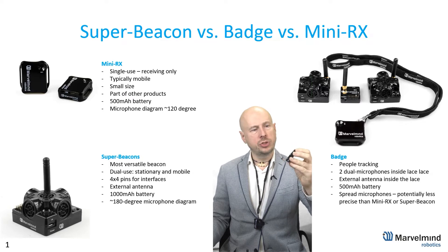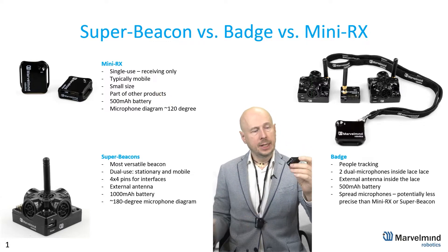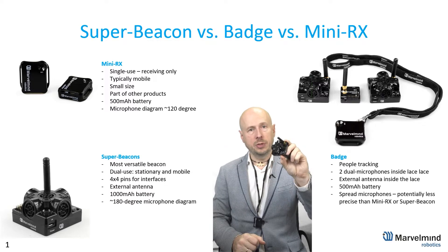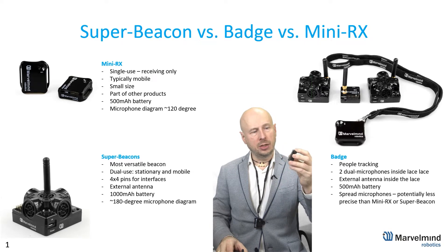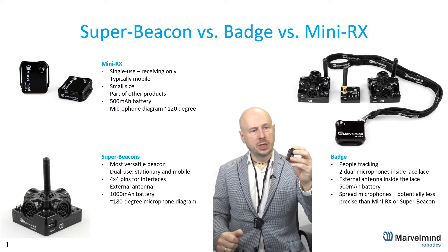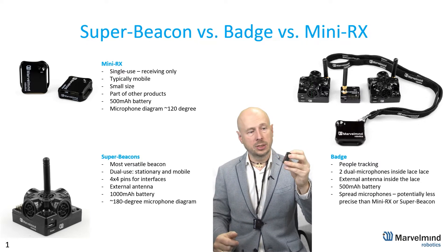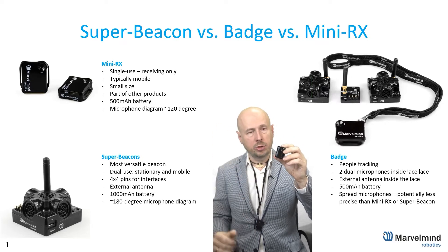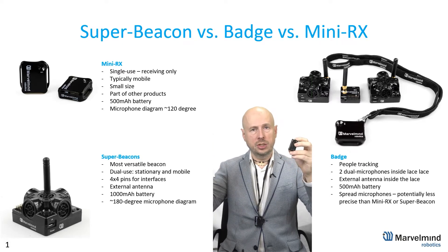MiniRx is mostly used as a receiving beacon in mobile devices, but not on its own — rather as part of other products like the badge, for example. MiniRx is single-use, meaning it can receive ultrasound but cannot transmit ultrasound like the Super Beacon does. Since it can only receive, it cannot build a map of beacons, cannot measure distance to neighboring beacons, cannot be used as a mobile beacon in non-inverse architecture, and cannot be used as a stationary beacon in inverse architecture, where stationary beacons must emit ultrasound.